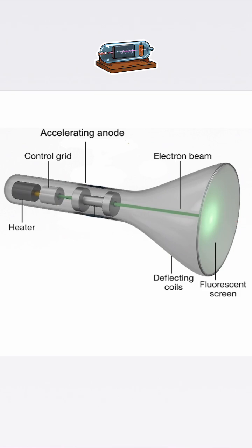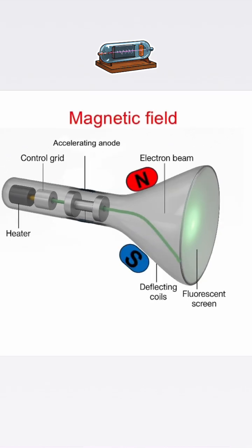This glowing spot lets us see how the beam moves. Thompson first tested this beam using a magnetic field. When he held a magnet near the tube, the glowing beam curved inside the magnetic gap. Only moving charged particles bend in a magnetic field, so this showed the cathode ray had mass and carried electric charge. The direction of the bend revealed that the particles were negative.